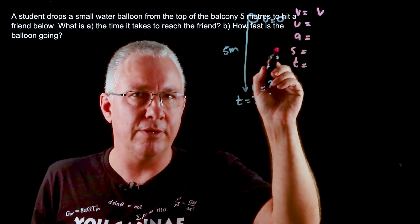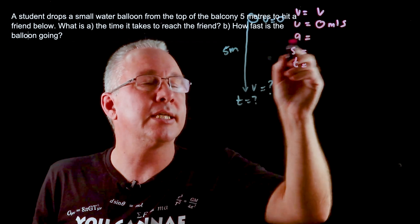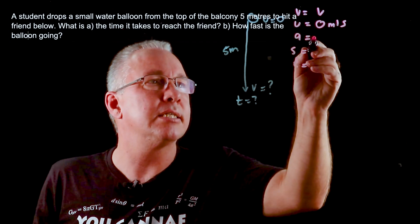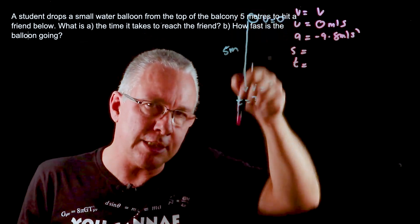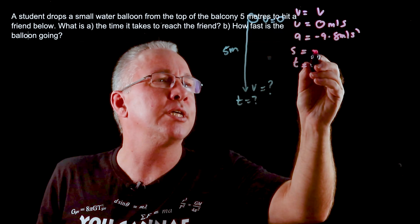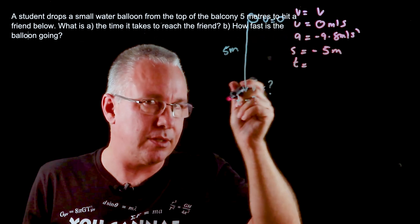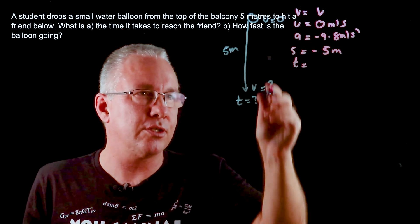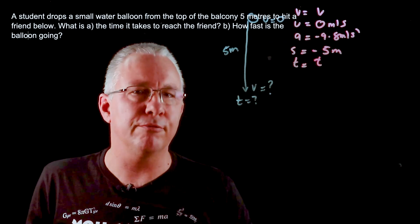V I'm looking for, so I literally write V there. U is zero meters per second. The acceleration being down is negative 9.8 meters per second squared. Our displacement in the downward direction is negative 5 meters. It's downward, the same direction as the acceleration, so we have a negative value. And T is what we're looking for.